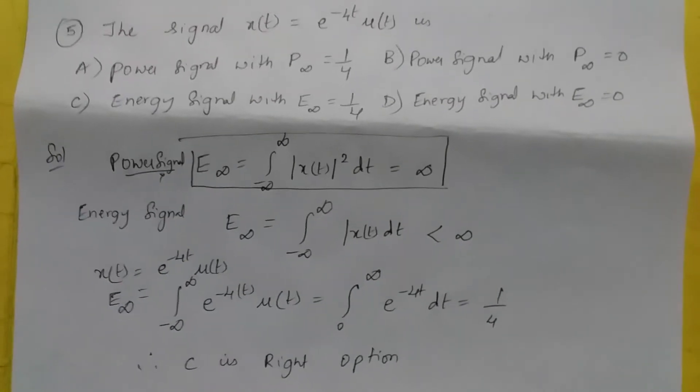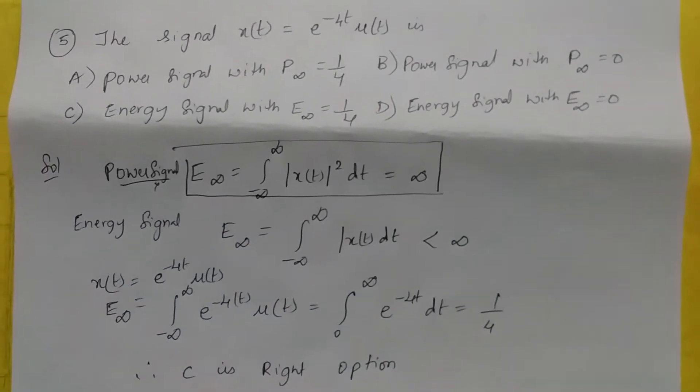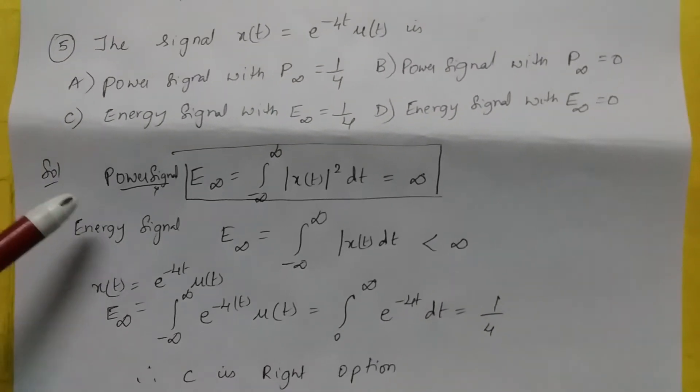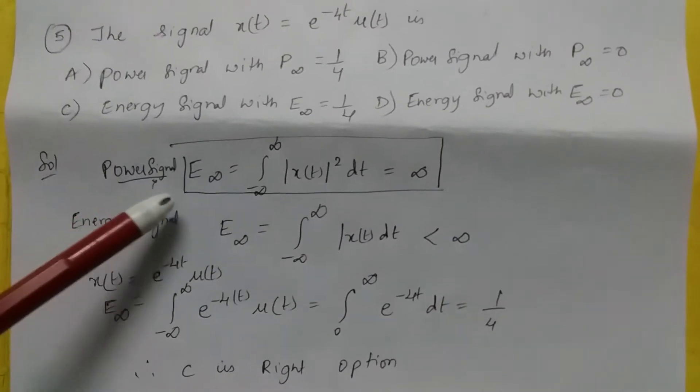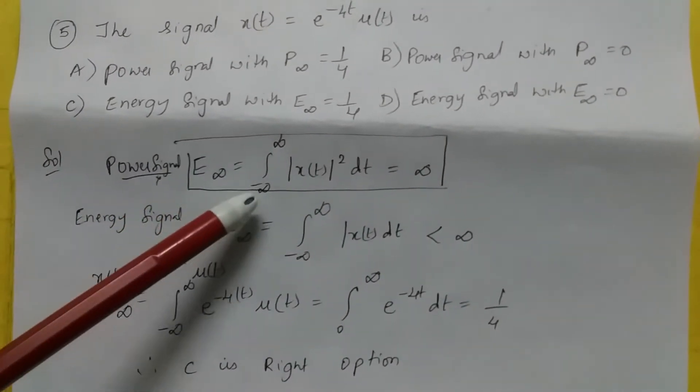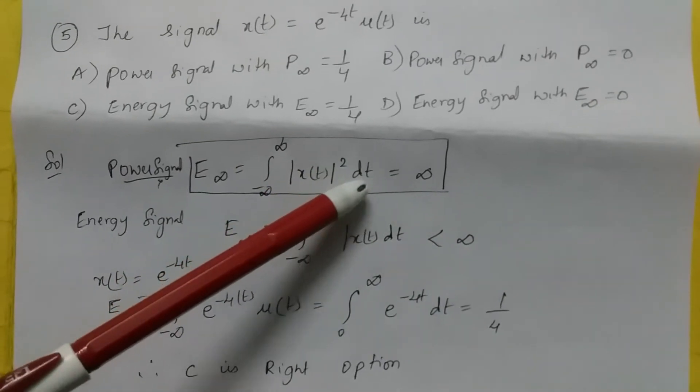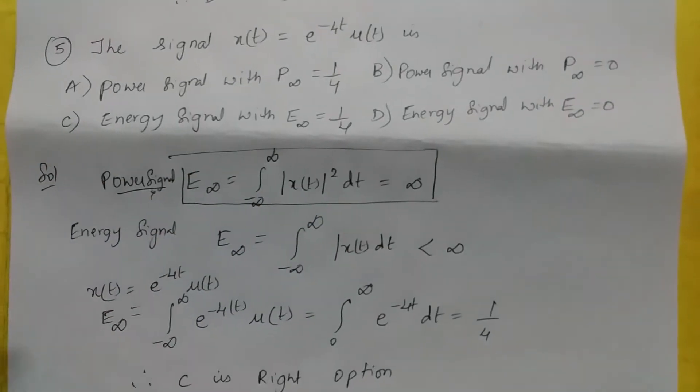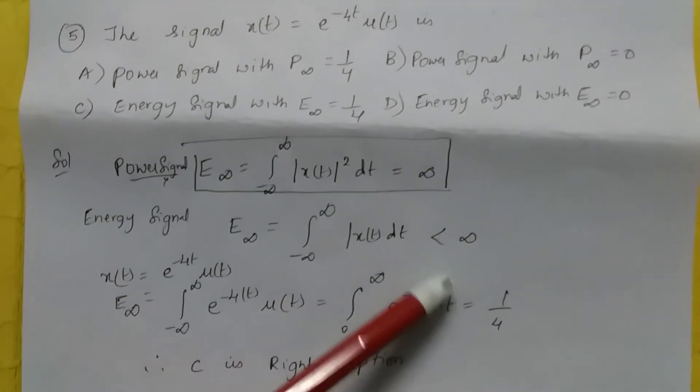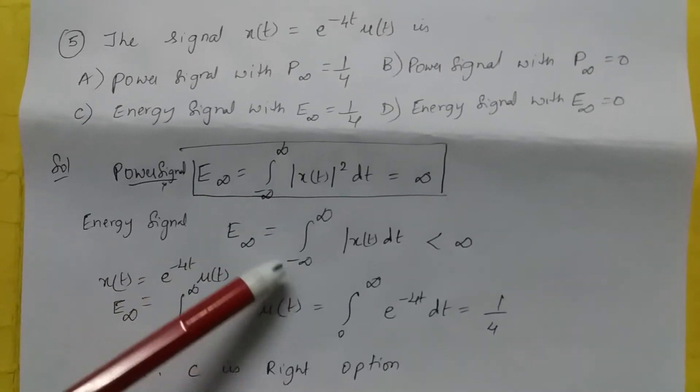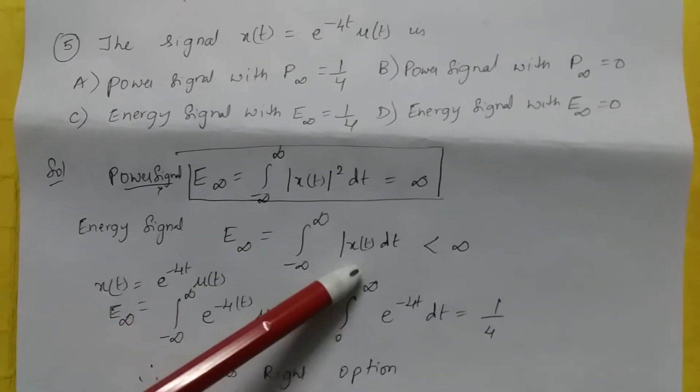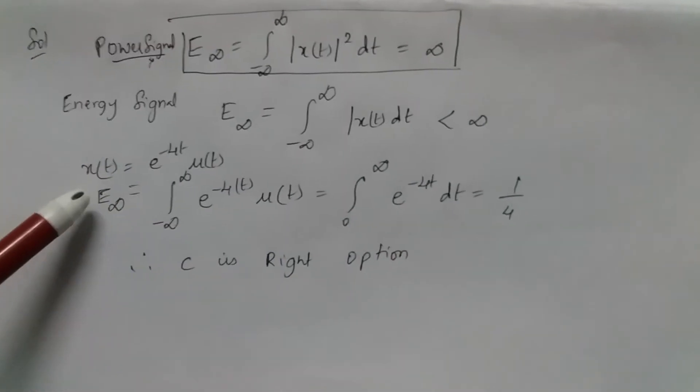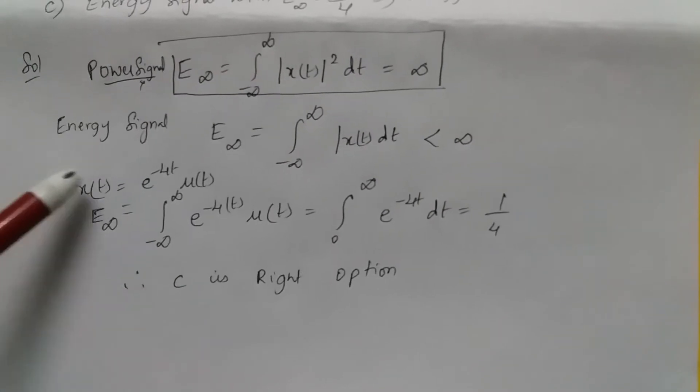The signal x(t) is equal to e to the power of minus 4t u(t). What is this? Is this a power signal or an energy signal? For any signal to be considered as power signal, it should satisfy the condition integral from minus infinity to infinity x(t) square dt is equal to infinity. And if it is energy signal, it should be less than infinity. E infinity is equal to integral from minus infinity to infinity x(t) dt and this should be less than infinity.